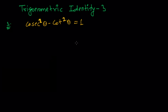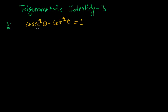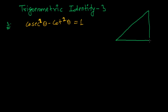Hi friends, in this video we're going to learn the trigonometric identity number three, that is cosec squared theta minus cot squared theta equals one. So let me draw a right angle triangle here.